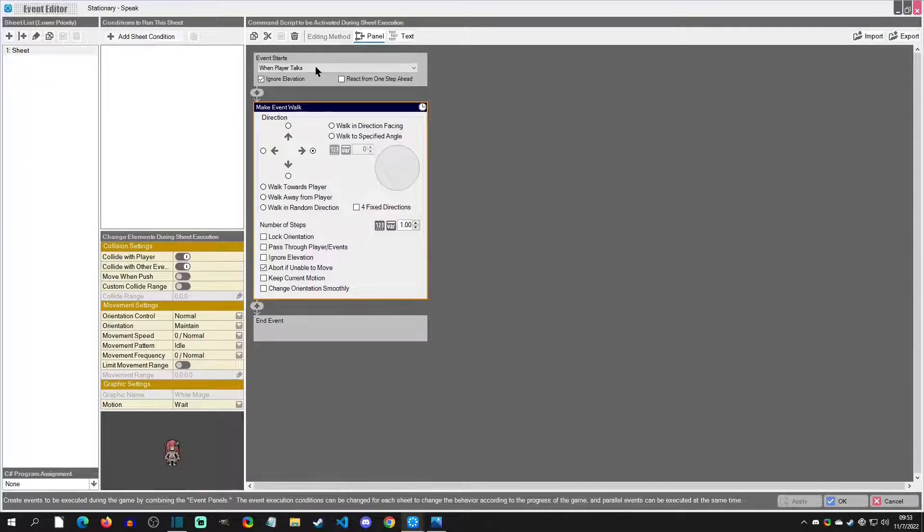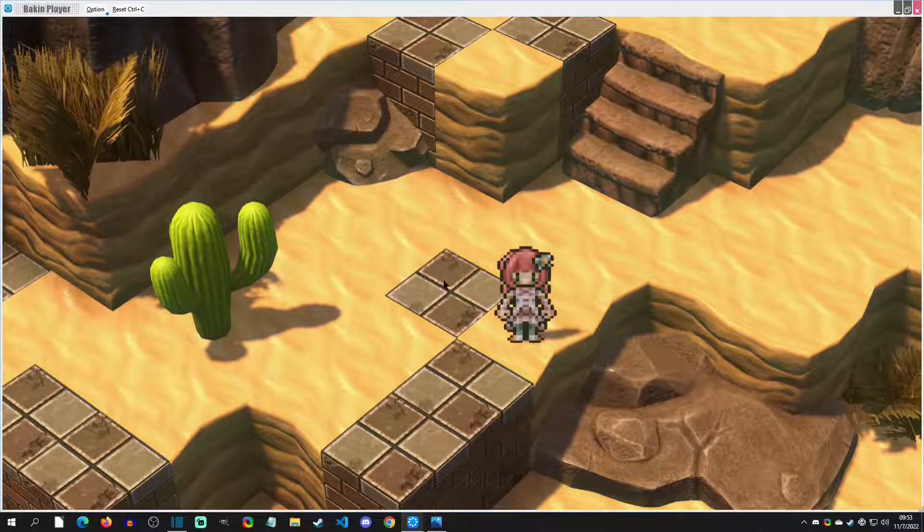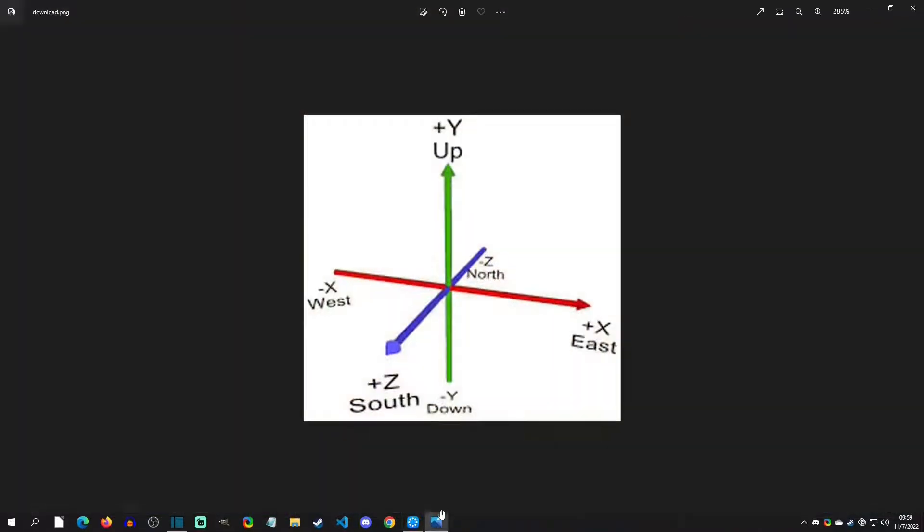Now if we actually put this in repeat only once parallel and go to play test this, we'll see that they indeed walk one tile to the east.